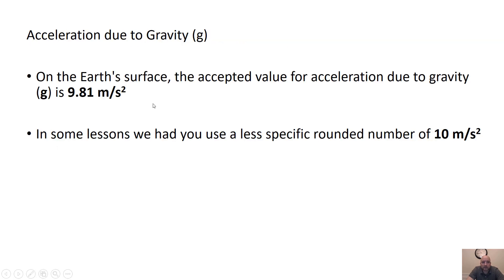On Earth's surface, the accepted value for acceleration due to gravity is 9.81 meters per second squared. Some places you might see 9.8, and we've used 10 a lot in these lessons just because we want to use a rounded number. In this lesson, use the numbers I give you, which will be 9.81 in most cases.